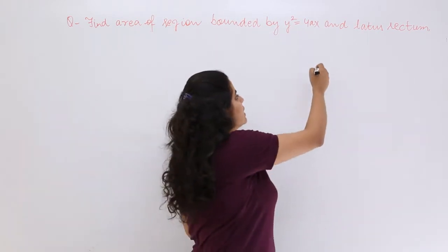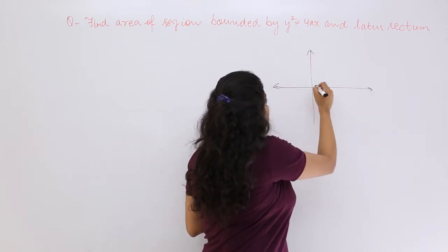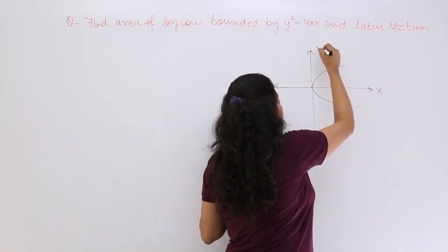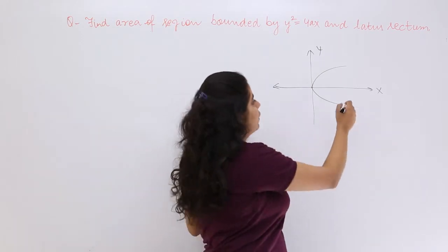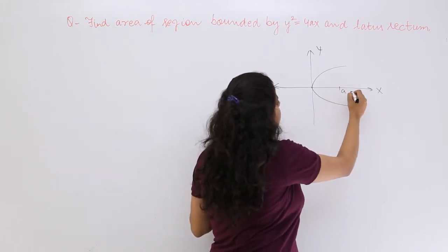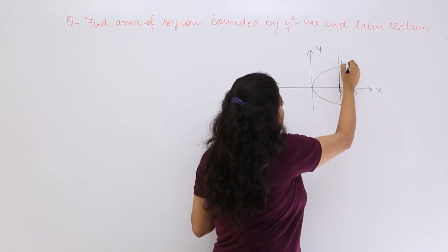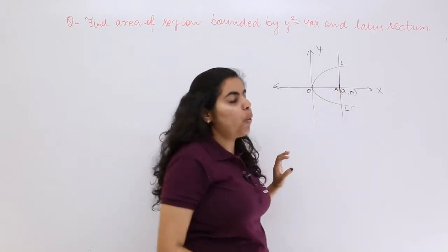As you know, y² = 4ax is the equation of a parabola, a right side opening parabola. If this is your x-axis, this is your y-axis, and you also know the equation of the latus rectum. If this is your point A(a,0), then this perpendicular to it would be your latus rectum. I can name it as LL' and this point as A, this as origin O.